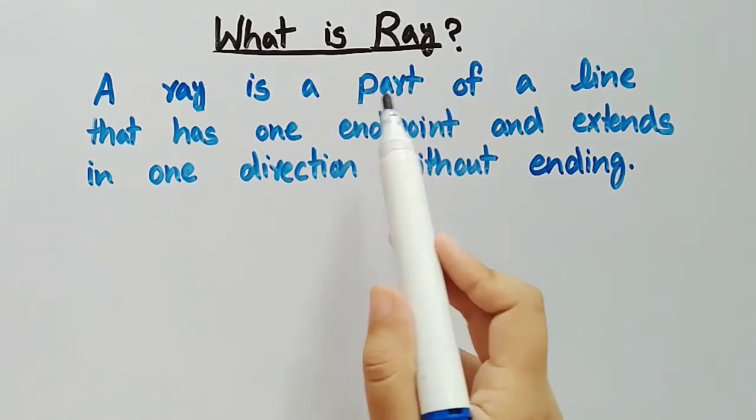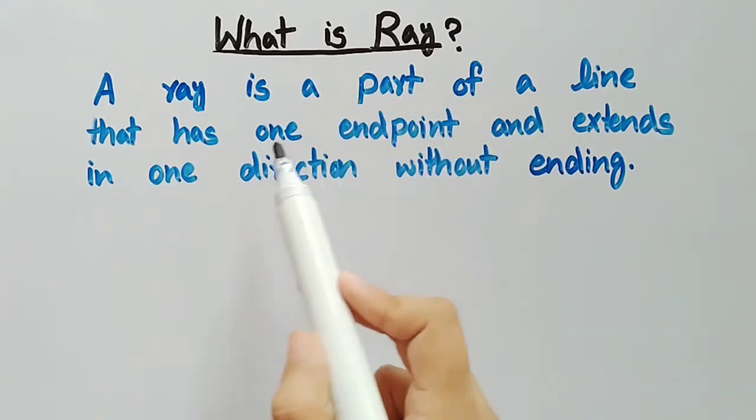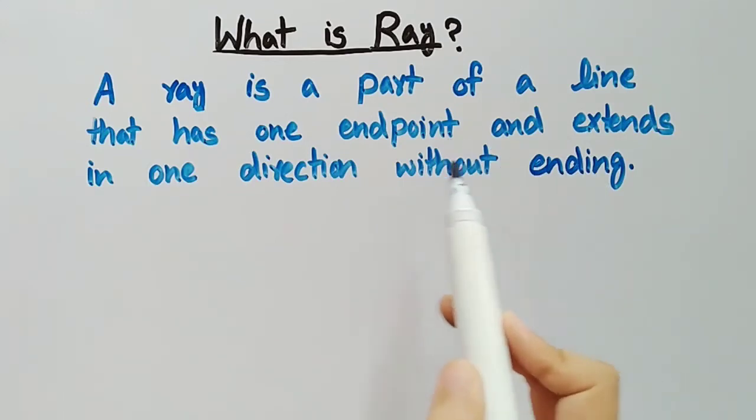Let's discuss what is a ray. A ray is a part of a line that has one end point and extends in one direction without ending.